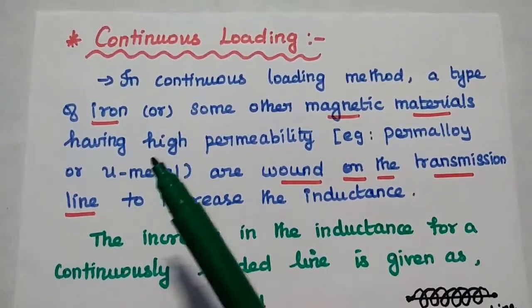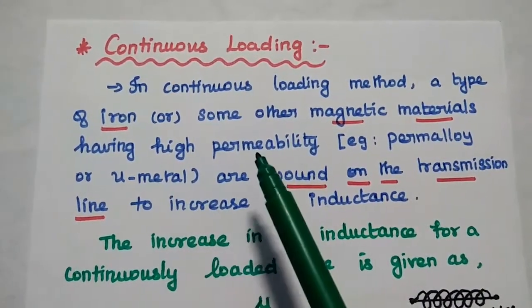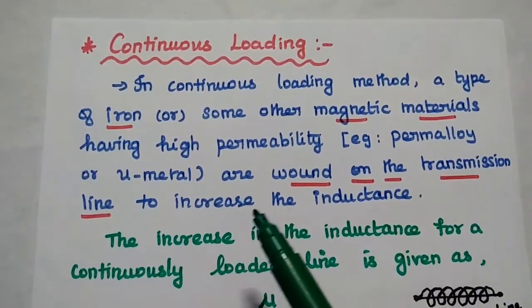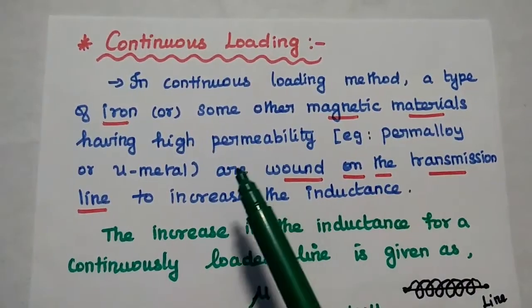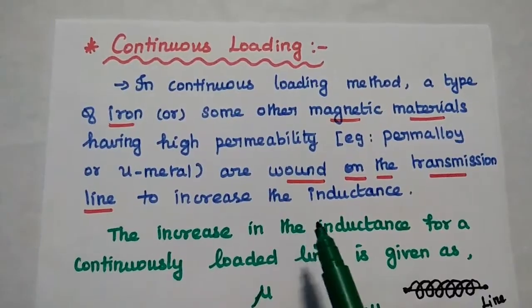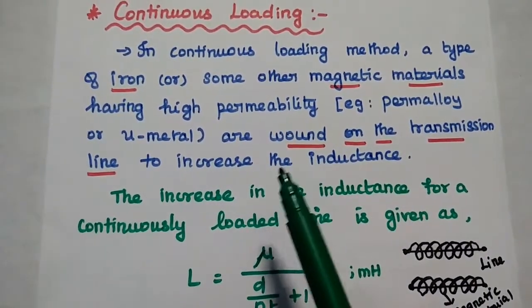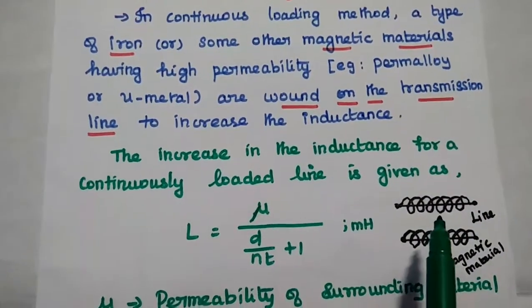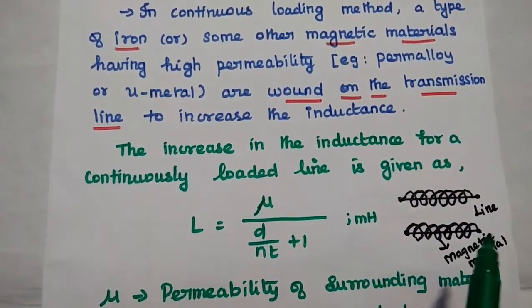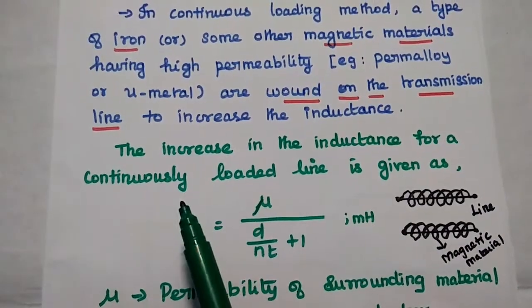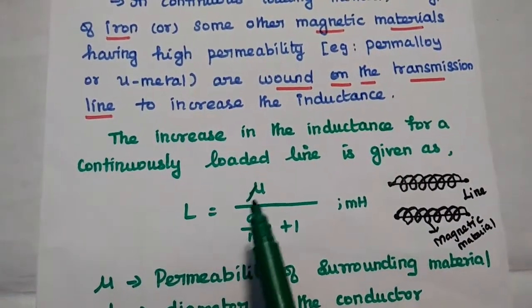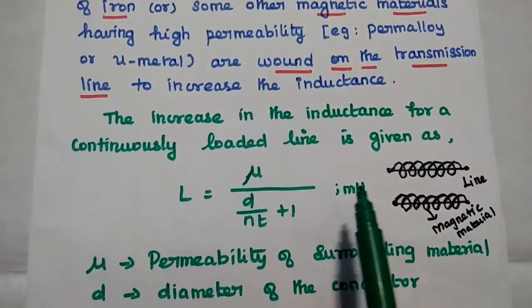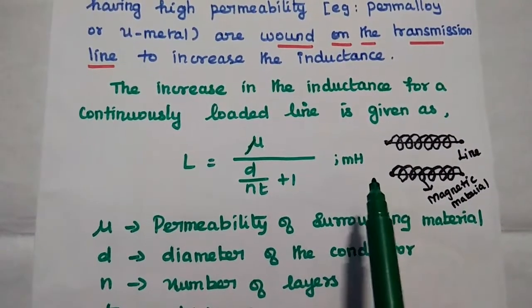In the continuous loading method, a type of iron or other magnetic materials having high permeability — for example, permalloy or mu-metals — are wound on the transmission line continuously to increase the inductance. This increases the magnetic permeability in the surrounding medium, thereby increasing the overall inductance. The increase in inductance for a continuously loaded line is given as L equal to mu by d by nt plus 1, in terms of millihenry.